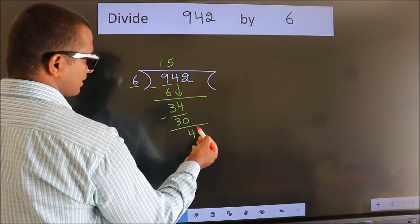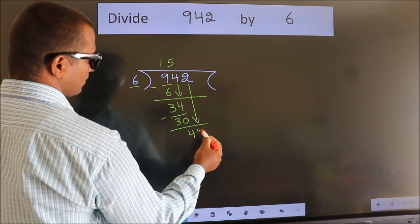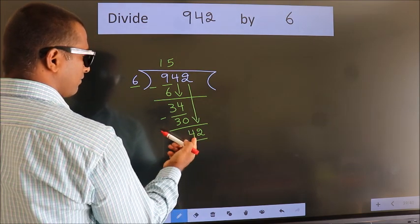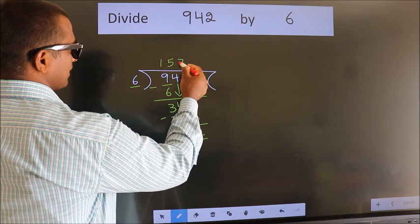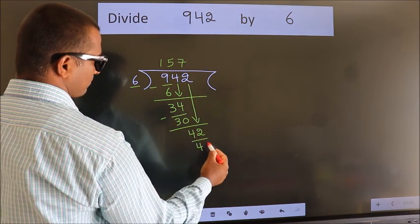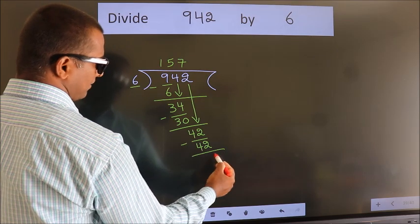After this, bring down the beside number. So 2 down. So 42. When do we get 42? In the 6 table, 6 sevenths 42. Now we subtract. We get 0.